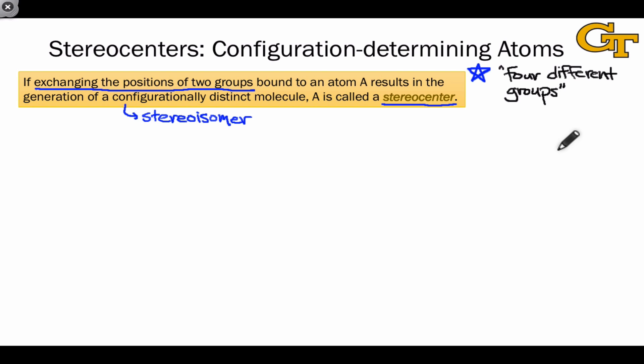Strictly speaking, a stereocenter is defined as we've seen here in the yellow box. Exchanging the positions of two groups at the stereocenter must result in the generation of a stereoisomer.